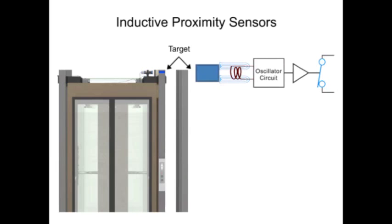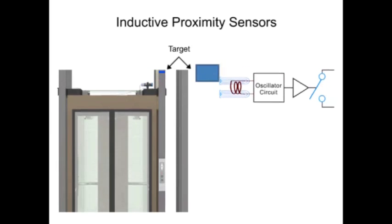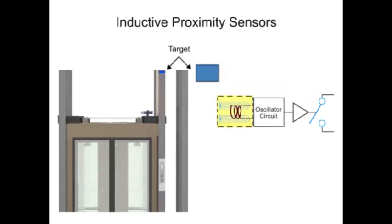This change in amplitude sends a signal to the switch, changing it to its normally open or normally closed configuration, respectively. When the metal target is removed from the sensor's range, the oscillator will return to its normal amplitude, and the switch will return to its normally open or closed output.